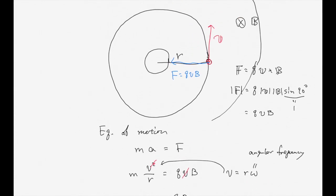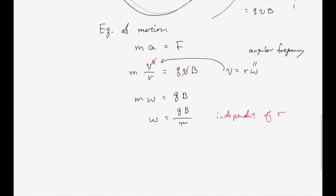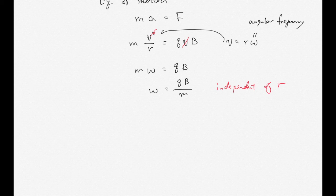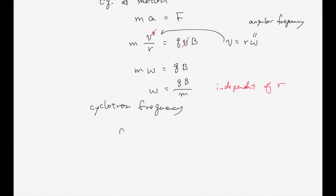So if particles are starting from the same point, they return at the same time because the frequency is the same regardless of radius. This frequency is called the cyclotron frequency. The cyclotron frequency f is defined as omega over 2 pi, which equals Q times B over 2 pi times m.